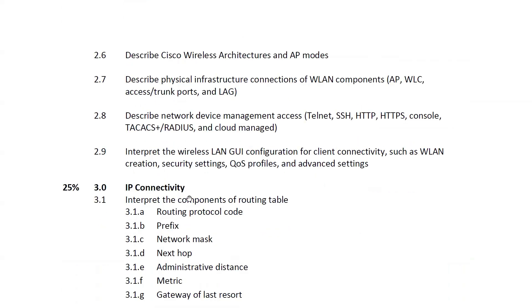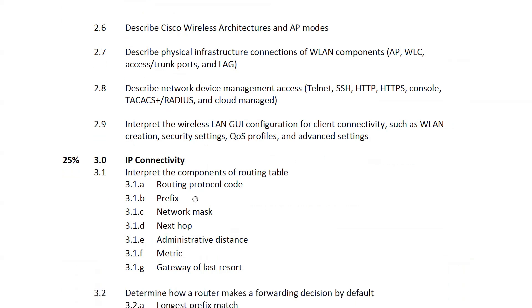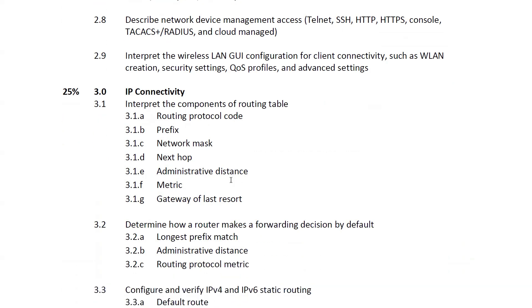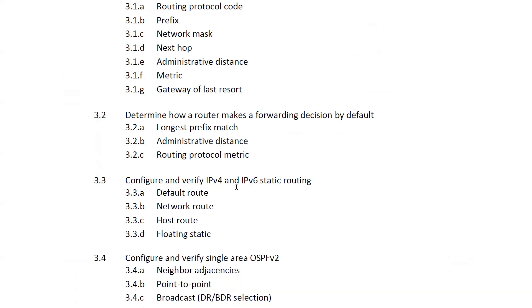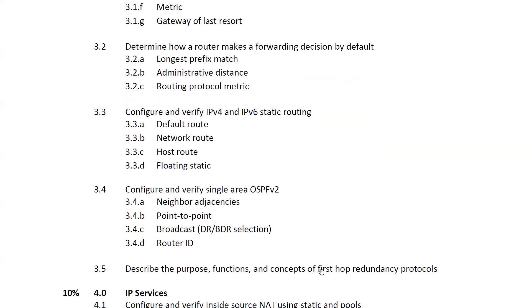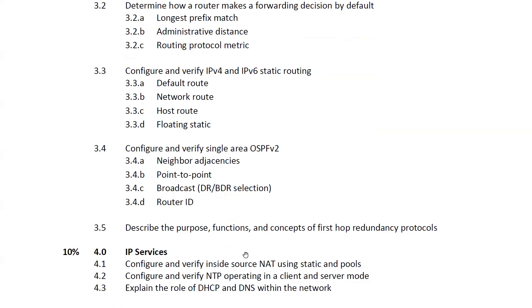In the IP connectivity module, it's all about routing. You'll learn about the different components of a routing table and how a router makes forwarding decisions. IPv4 and IPv6 routing is covered, along with single-area OSPF version 2, including neighbor adjacencies, point-to-point networks, DR/BDR concepts, and Router ID. FHRP protocol — its purpose, function, and concept — is also included, which is more theoretical than practical.